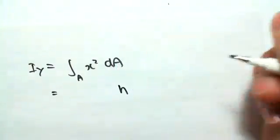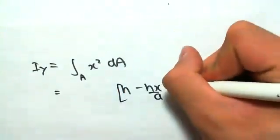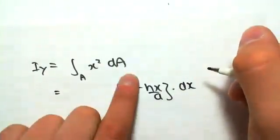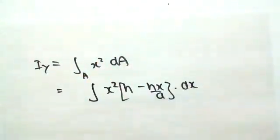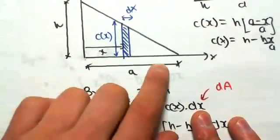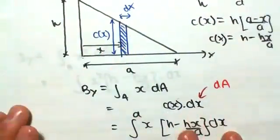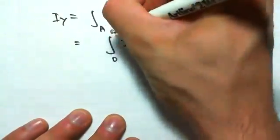So we have h minus hx on a, that's times dx, so that's the same as dA. x squared out the front, this integral likewise, dx, so we're looking at this thickness here, is going from 0 to a, that would fill up all this area. So the integral is from 0 to a.